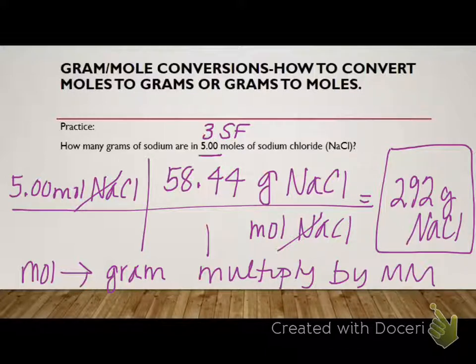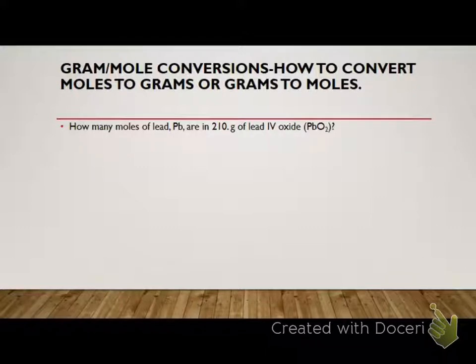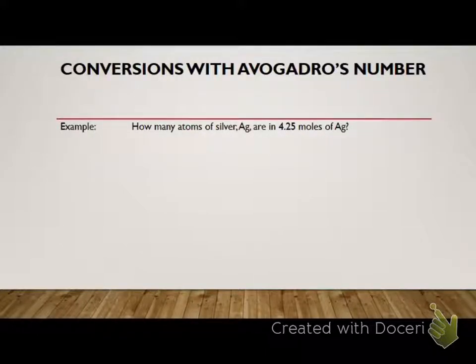All right. So that's grams to moles, moles to grams. What if I want to know atoms or particles or molecules? What do you think I'm going to use? I'm not going to do this problem, but if you want to do it in your notes, this right here should be how many moles of PbO2. It's a typo because they're giving you that as your compound. So fix that in your notes if you want to do that as an example. Now we have atoms or wants to know how many atoms of silver are in 4.25 moles of silver.